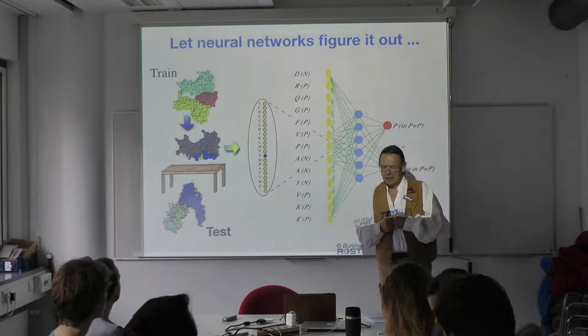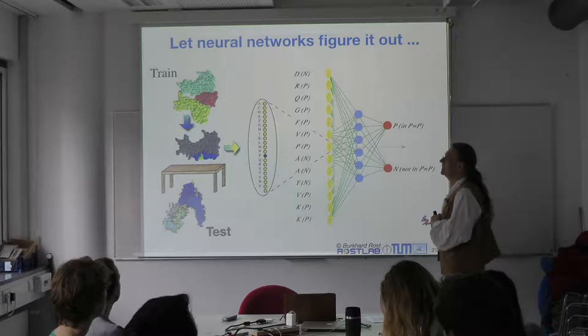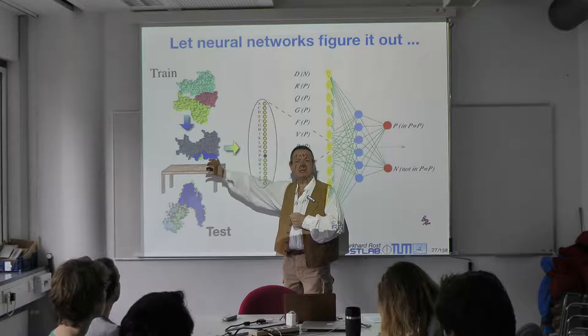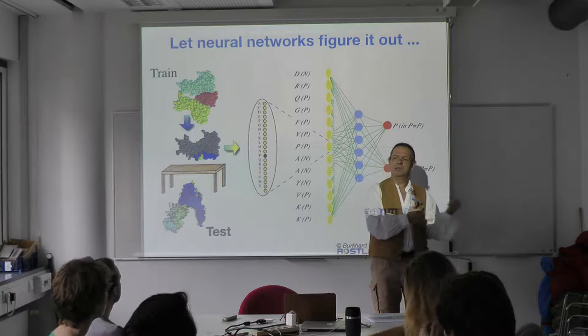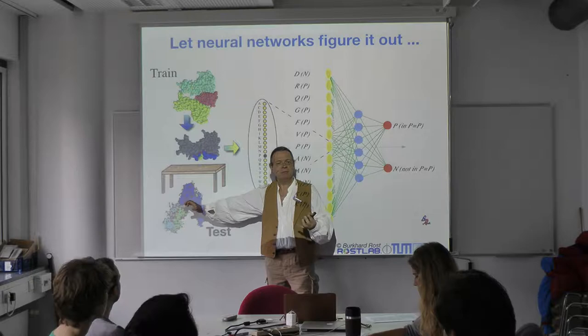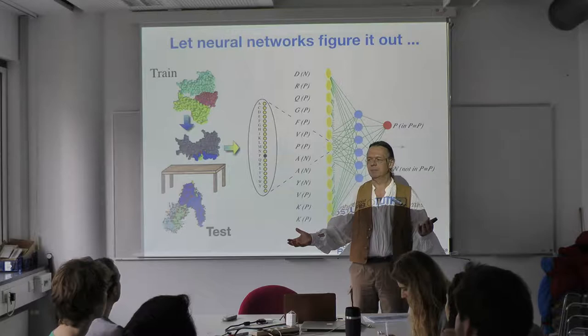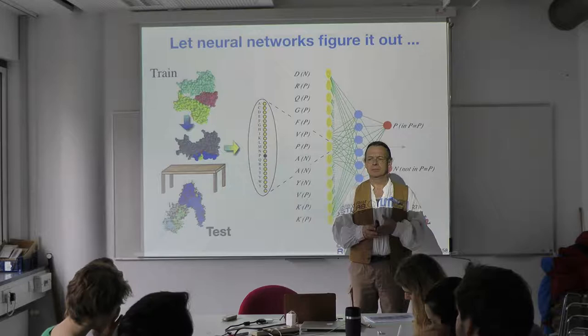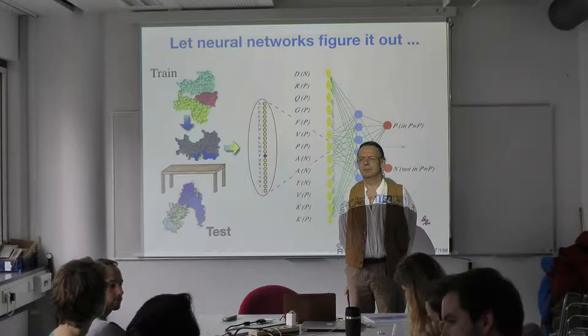In order to extract some knowledge from the data, what is absolutely essential is that you do some sort of cross-validation. Cross-validation means you take all the data you have and split it into two. For one part of the data you hide it under the table — you pretend you do not know that part. Why do you have to do that?